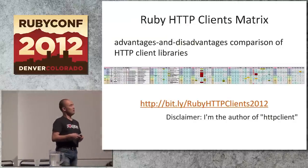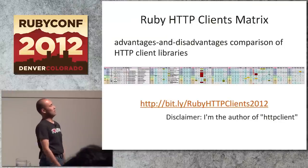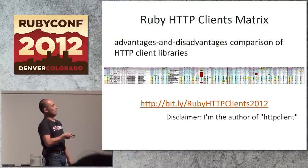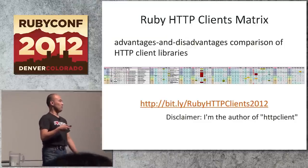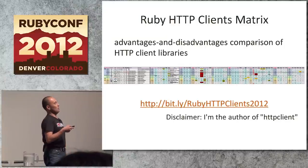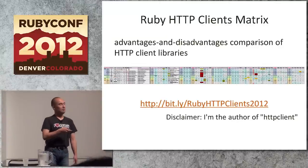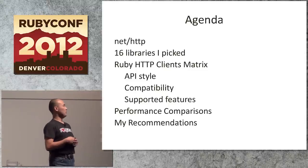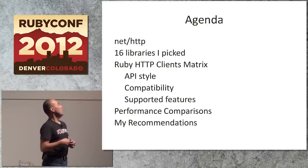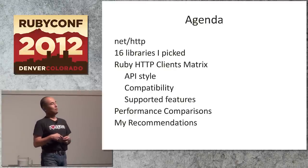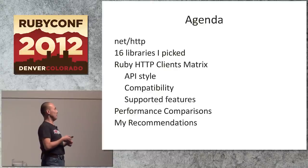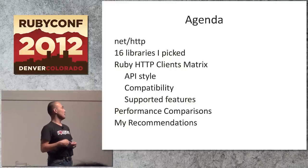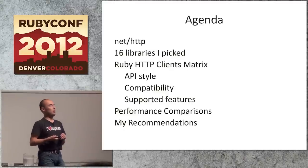Today I'll introduce the matrix I created that shows the advantages and disadvantages of Ruby's HTTP client libraries. You can see the whole matrix from this URL — please take care when referring to it because I'm also one of those HTTP clients. The agenda: I'll provide a brief introduction to NetHttp internals, show 16 Ruby HTTP client libraries I picked, explain the matrix in detail covering API style, compatibility, and supported features, provide a performance comparison, and finally show my recommendations of Ruby HTTP clients for various purposes.